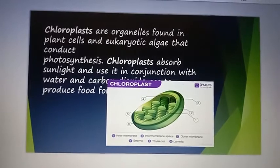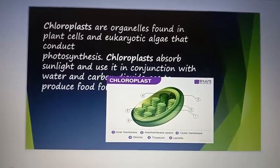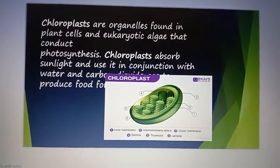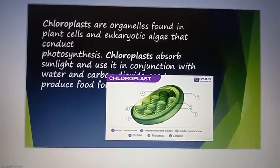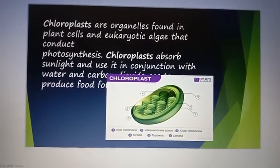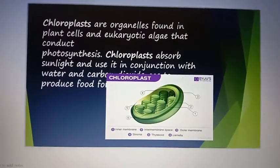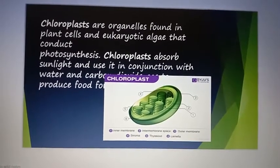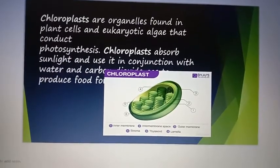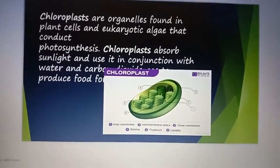Chloroplasts are organelles found in plant cells and eukaryotic algae that conduct photosynthesis. Chloroplasts absorb sunlight and use it in conjunction with water and carbon dioxide to produce food for plants. Thank you.